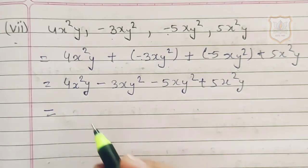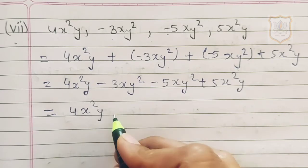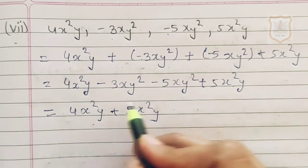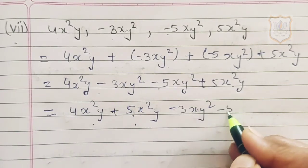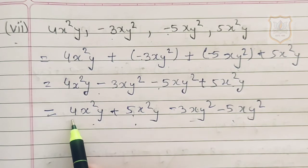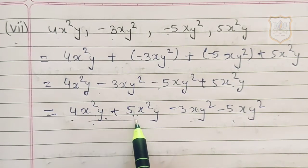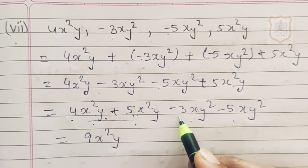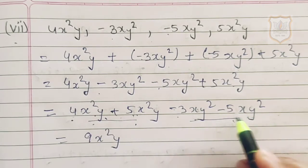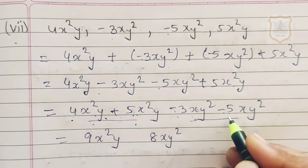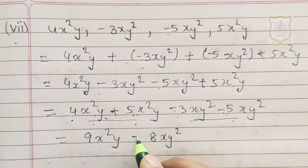Arranging like terms: 4x²y plus 5x²y, then minus 3xy² minus 5xy². Adding 4x²y plus 5x²y: 4 plus 5 gives 9x²y. For minus 3xy² minus 5xy²: minus minus gives plus, so 5 plus 3 is 8, and placing the negative sign gives minus 8xy². The answer is 9x²y minus 8xy².